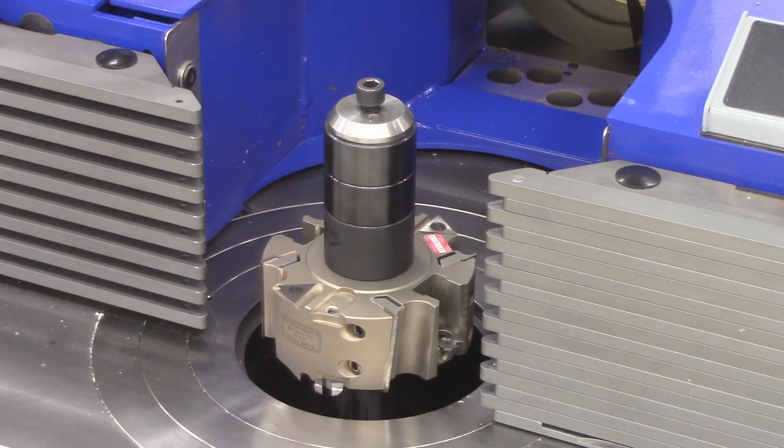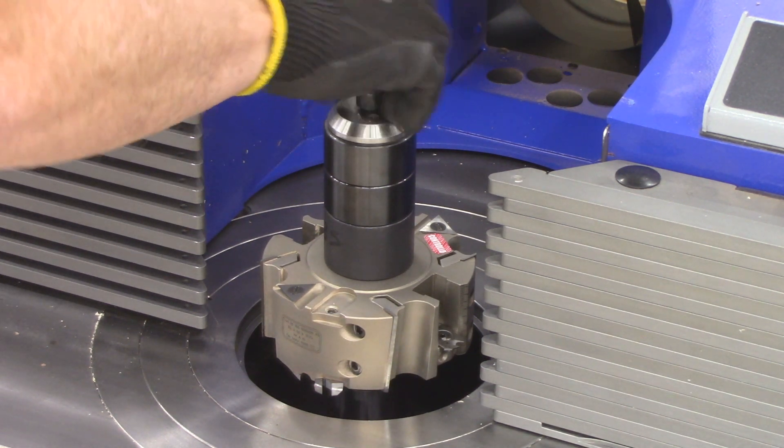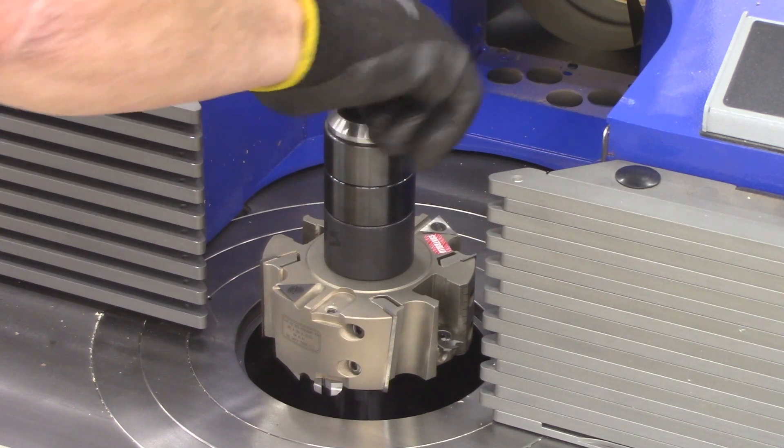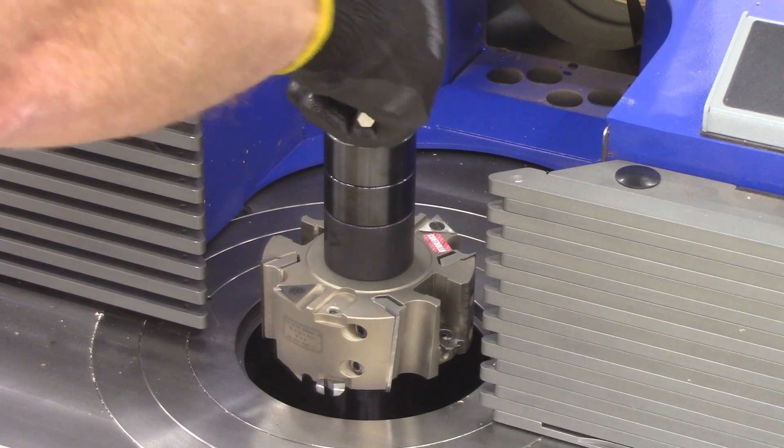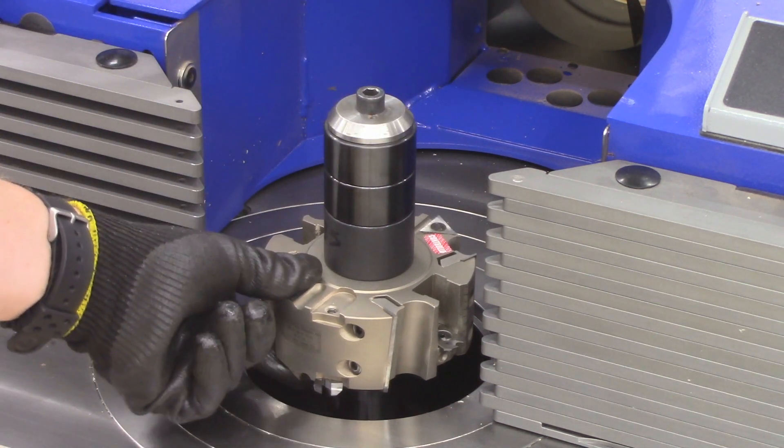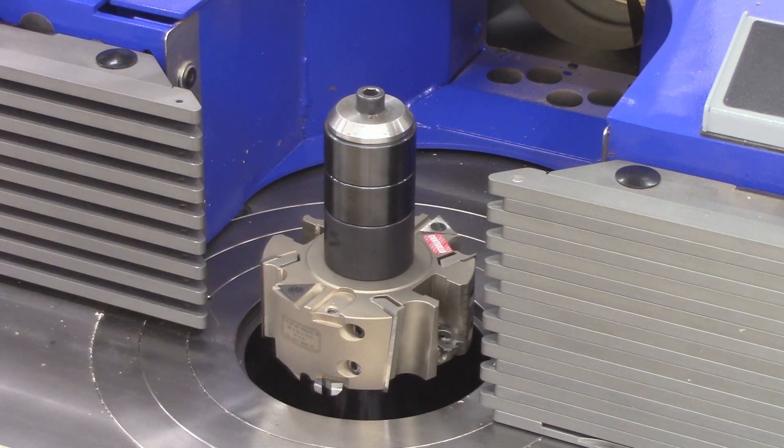I better tighten the spindle lock on. And you don't need to over tighten that. You just need it tight enough to where it's secure and the cutter does not spin on the spindle.